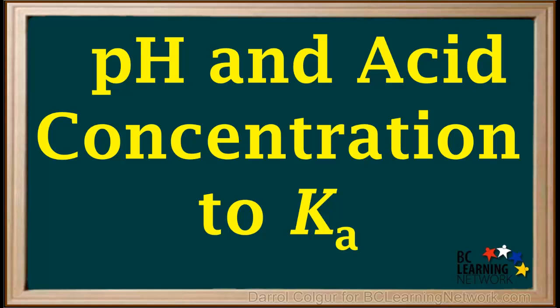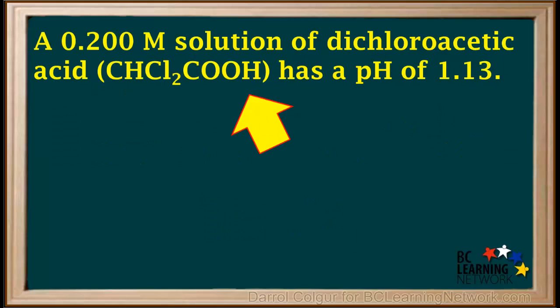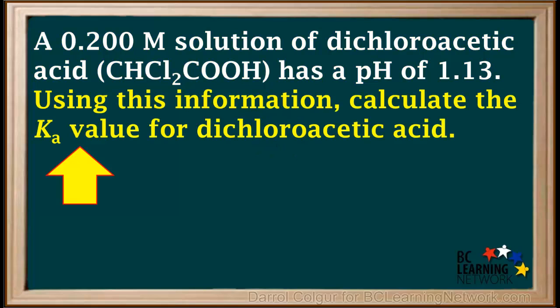Here, we'll show you how to calculate the value of the acid ionization constant, Ka, for a weak acid of a given concentration. We're told that a 0.2 molar solution of dichloroacetic acid, CHCl2COOH, has a pH of 1.13, and we're asked to use this information to calculate the value of Ka for dichloroacetic acid.